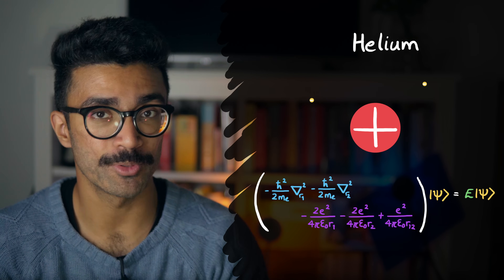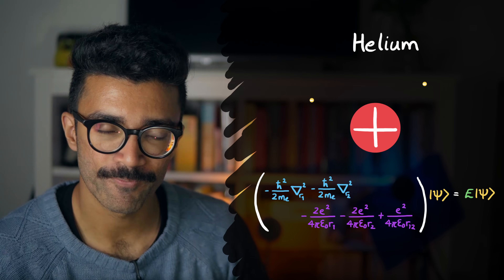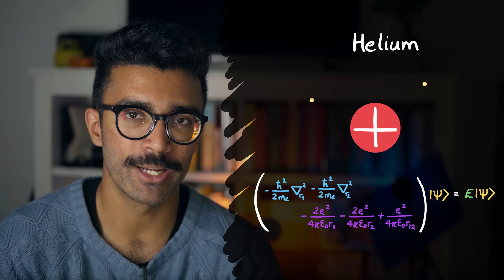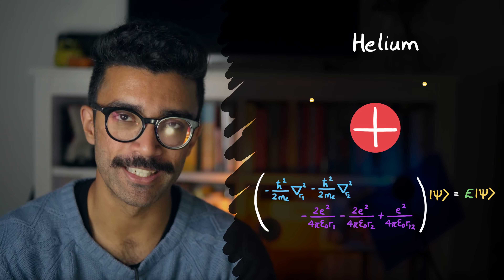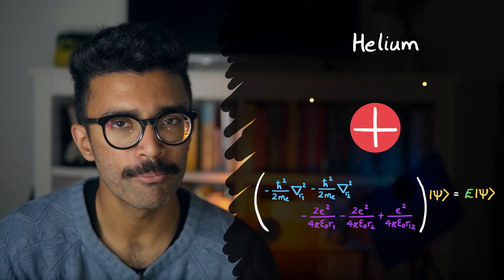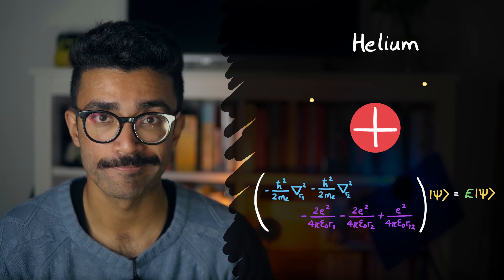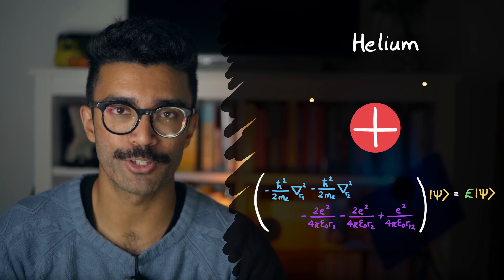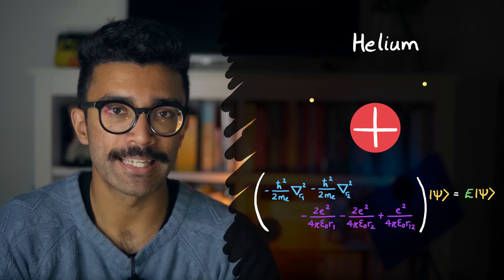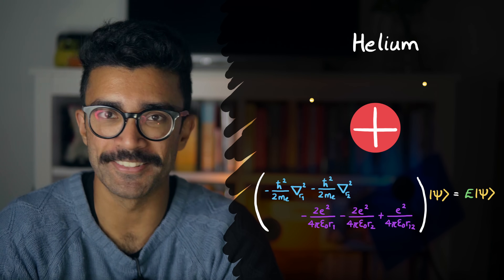We can use numerical methods, where a computer goes through many possible versions of psi based on educated guesses and tries to see if they fit the equation. We could also use perturbation theory when one of the terms is very small compared to the others. But we have no technique that easily lets us solve for psi using just pen and paper. And remember — this is for a simplified version of helium: we assumed the nucleus is absolutely still, that it acts as a single object with charge +2, and that the atom is isolated in space.